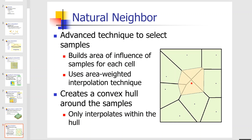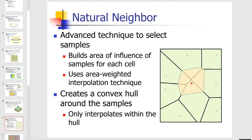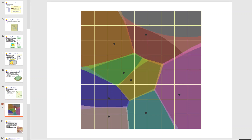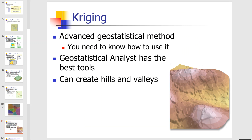Natural Neighbor is another method used to predict values for unknown areas. It creates a fishnet-like structure and builds its analysis on that logic, using the mathematical formulas built into the software. Kriging is a more advanced geostatistical method with more refined mathematical formulas, allowing you to do better analysis and predict more accurate values.